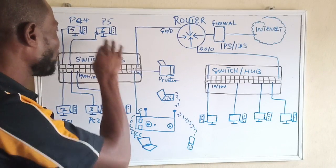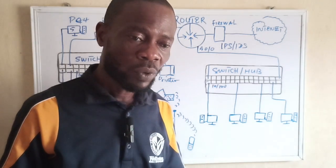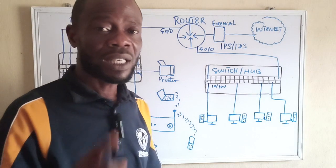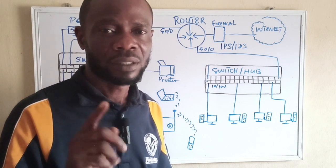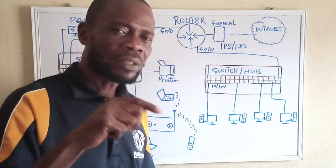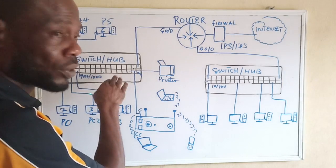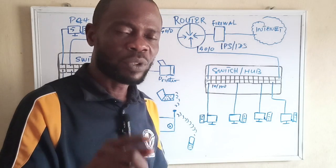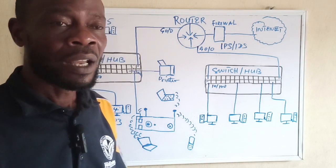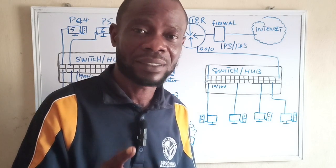Now look at this device — let's say this is a hub. All computers connected to this hub are in one collision domain, meaning they share bandwidth. A network with a hub means all connected computers share bandwidth because they are in one collision domain and one broadcast domain. Inside the hub, logically there is a single wire all computers are connected to, sharing files and bandwidth. A hub is a half-duplex device.